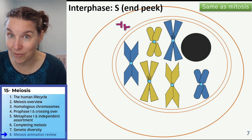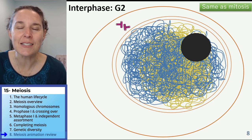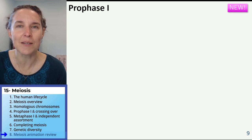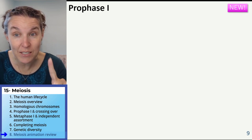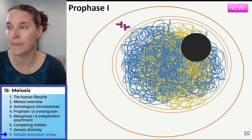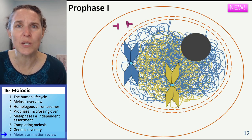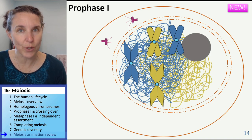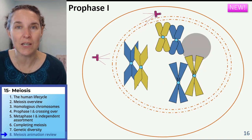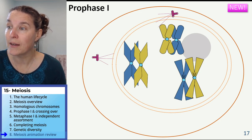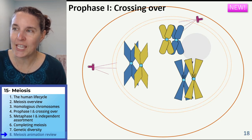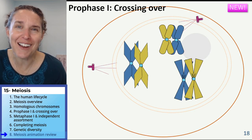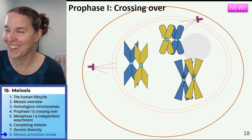Homologues are the same but different. Interphase — getting ready to do some dividing. The events of prophase one have unique qualities. The expected things happen: the DNA condenses into chromosomes, the centrioles move to the poles, the nucleolus disappears, the nuclear envelope disappears. The different thing — loud and proud — the homologues hook up.